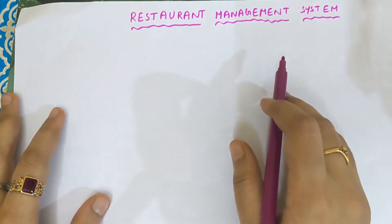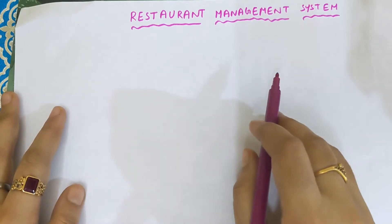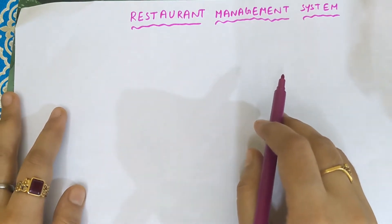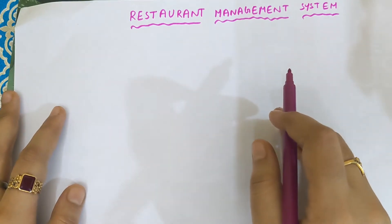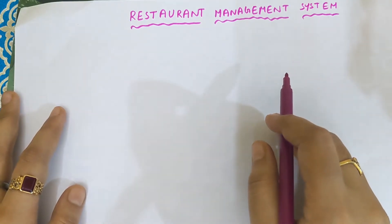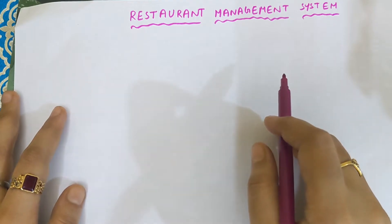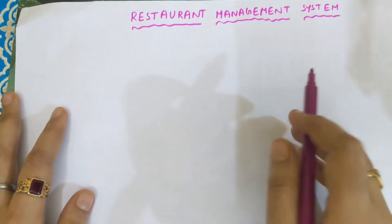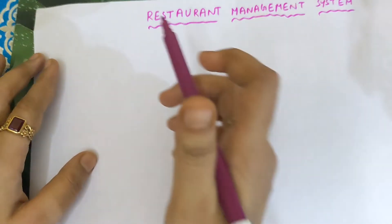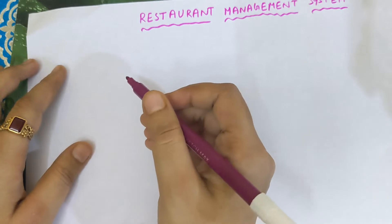So what is the first step for drawing the ER diagram? The first step is we need to identify the entities. An entity is an object with physical or conceptual existence. An entity must be written inside a rectangular box, so first let us find out the entities and write inside the rectangular boxes.